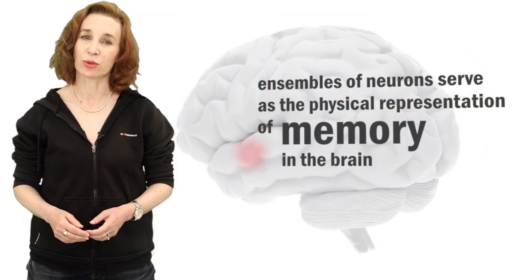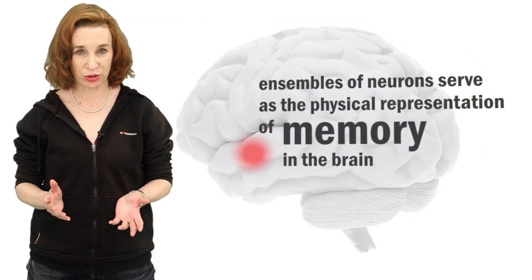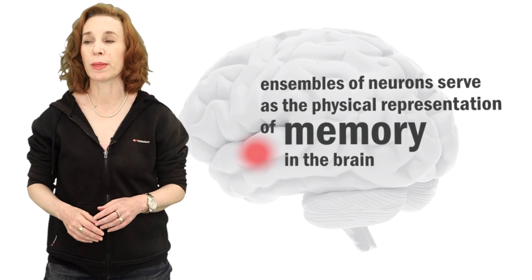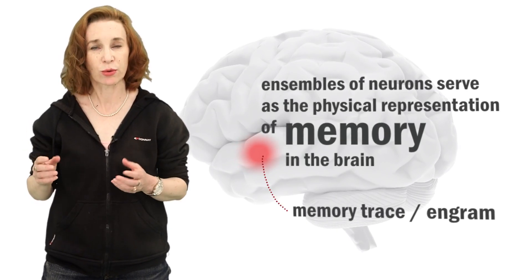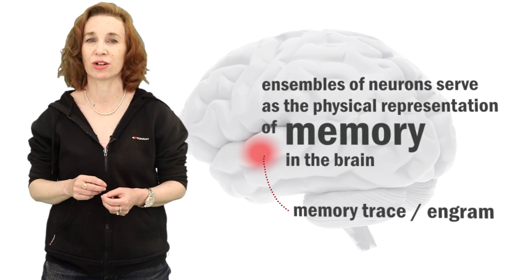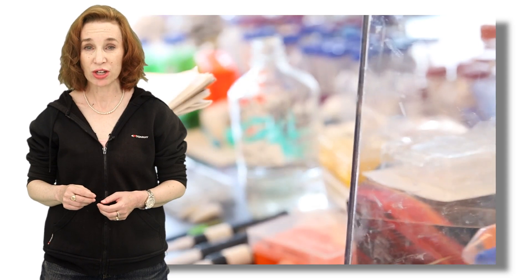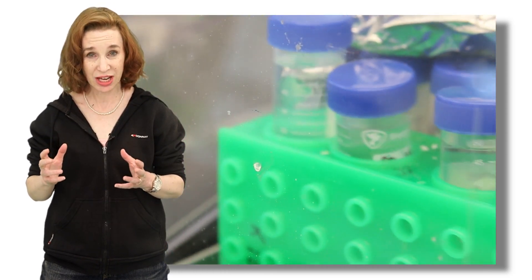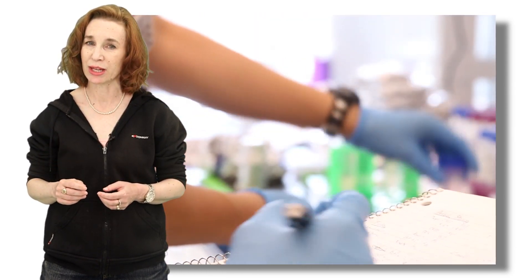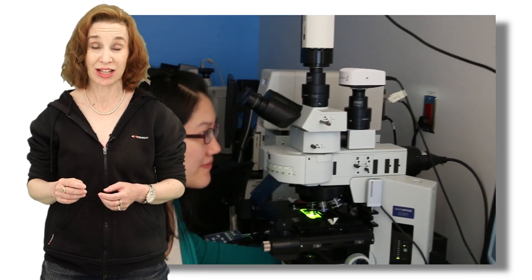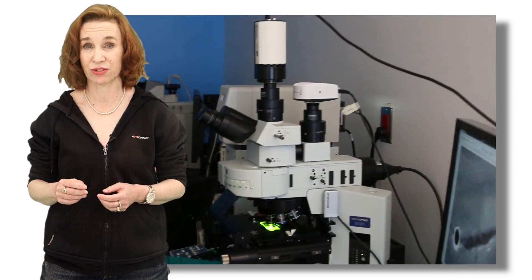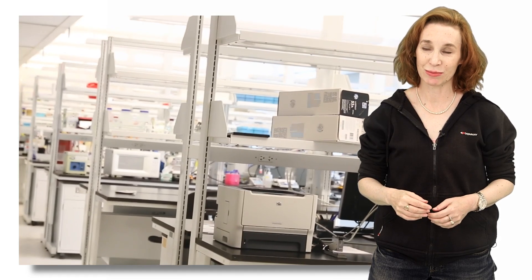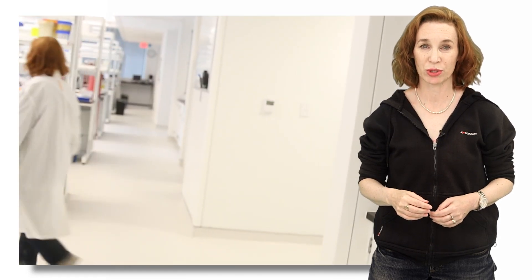It's generally agreed that collections or ensembles of neurons serve as a physical representation of memory in the brain — the memory trace, or as Carl Lashley called it, the engram. However, understanding and finding the actual neurons or cells that encode any one memory has been challenging scientists since Lashley's search for the famous engram. We were inspired by Lashley's famous search and began our own search for a memory trace.